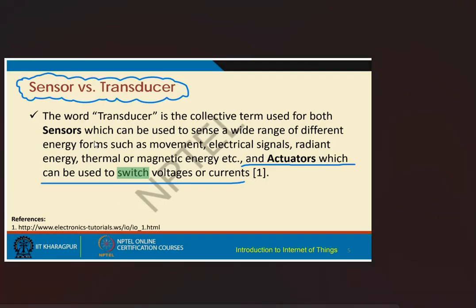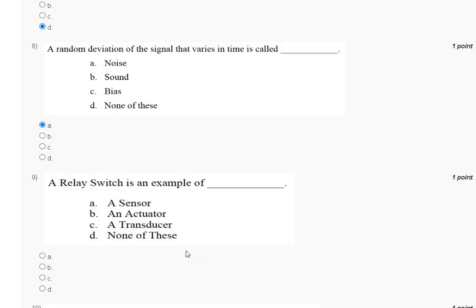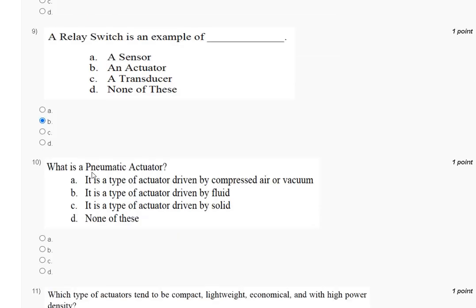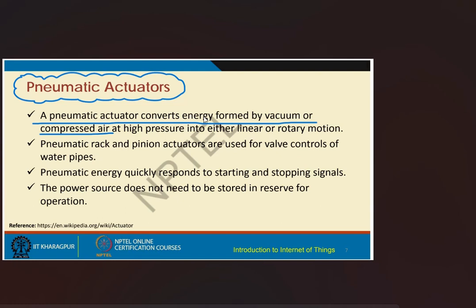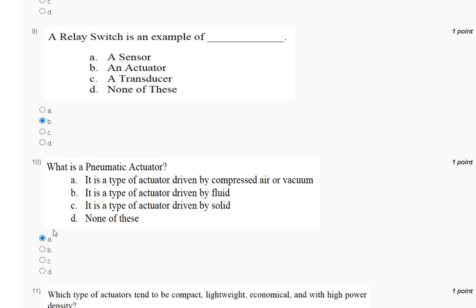Question nine involves a transducer and actuator which can be switched to switch voltage and current. The correct answer to question nine is option B. Question ten: what is a pneumatic actuator? Option A: it is a type of actuator driven by compressed air or vacuum; option B: driven by fluid; option C: driven by solid; option D: none of these. A pneumatic actuator converts energy from vacuum or compressed air at high pressure into linear or rotary motion. The correct answer to question ten is option A, compressed air or vacuum.